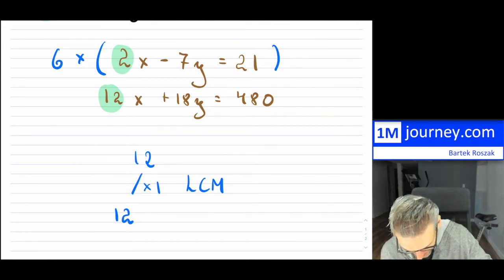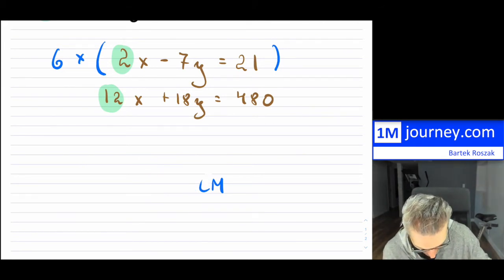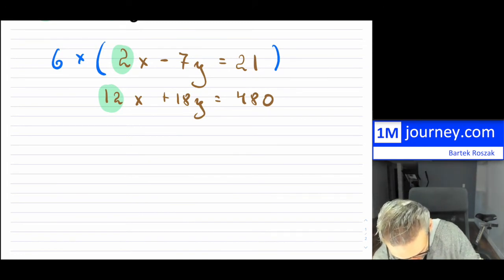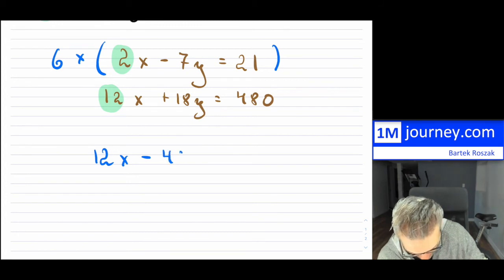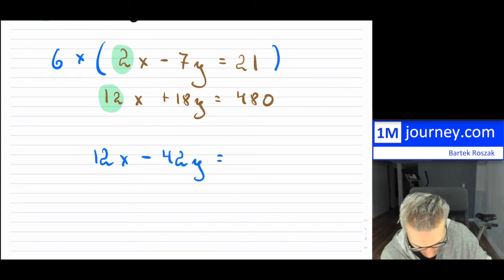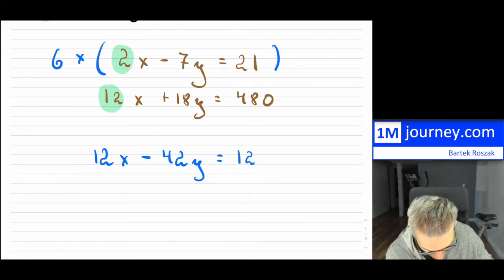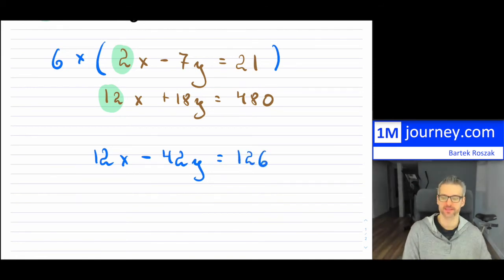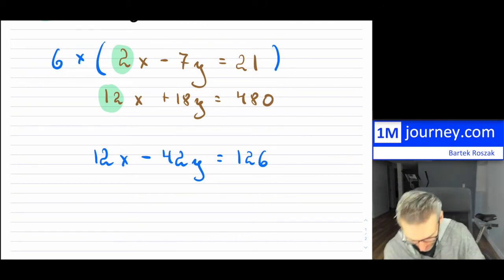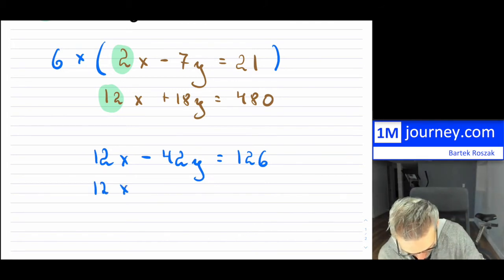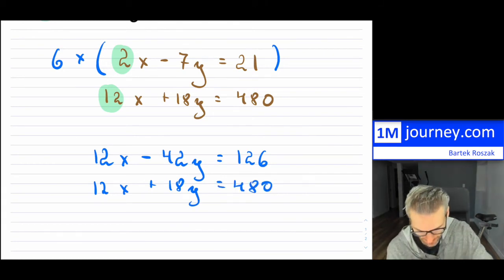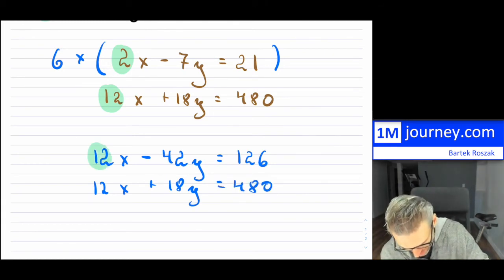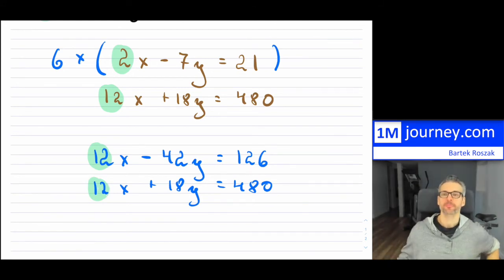So what I'm going to have now is I'm going to have 12x minus 6 times 7 is 42y is equal to 6 times 21 which is going to be 126. Now the bottom one won't change: 12x plus 18y is equal to 480.